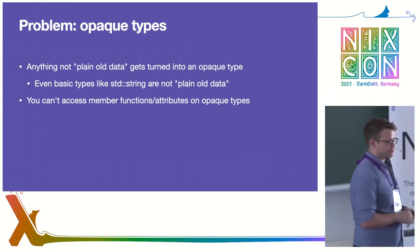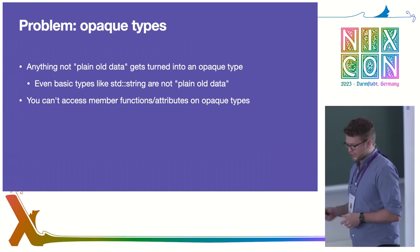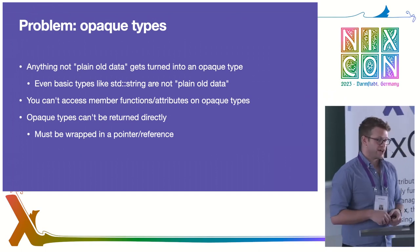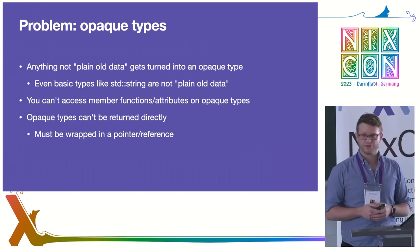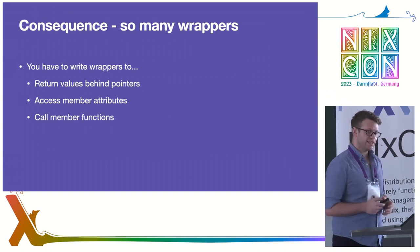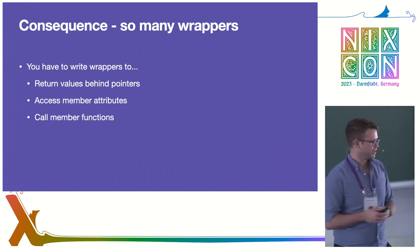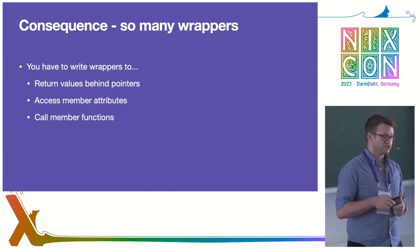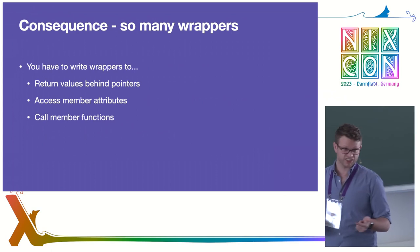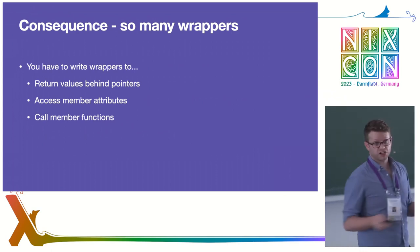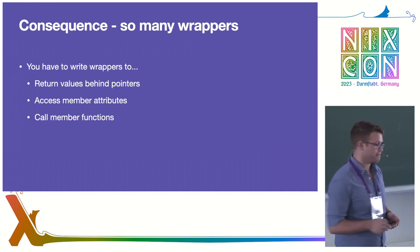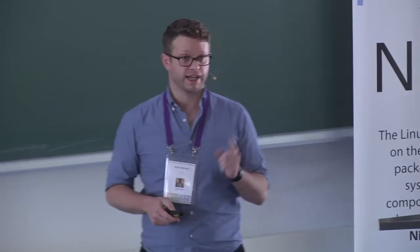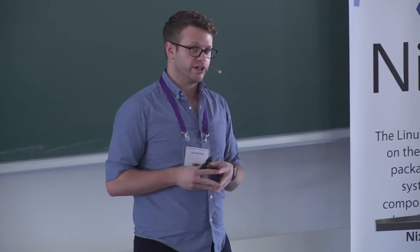You can't access member functions or attributes on opaque types, and you also can't return opaque types directly to Rust — you have to wrap them in some kind of pointer. That sucks. What this means is that you have to write so many wrappers: wrappers to return values behind pointers if they aren't already, wrappers that access member attributes — basically getters and setters — and functions that just call member functions. This brings us to the first big takeaway: if you think you're going to write bindings to Nix without writing any C++, I regret to inform you that is not the case.